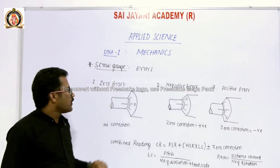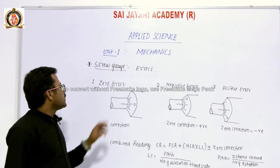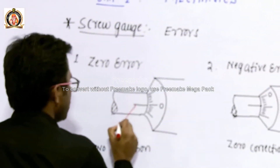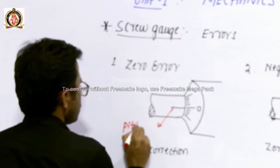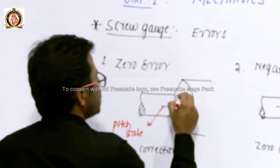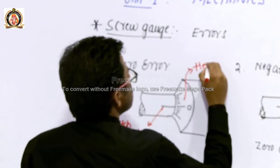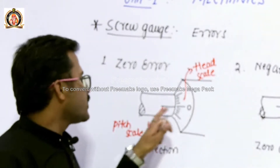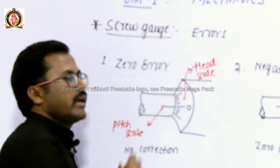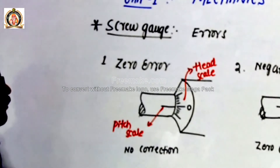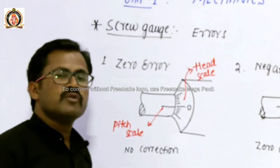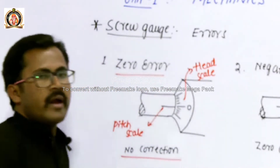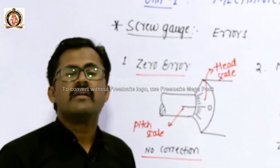So what is zero error? In a screw gauge, we say it has zero error when the zero of the pitch scale coincides with the zero of the head scale. This scale is known as the pitch scale and this other scale is known as the head scale. When the zero of the pitch scale coincides with the zero of the head scale, the screw gauge is said to be perfect or accurate, and no correction is required.